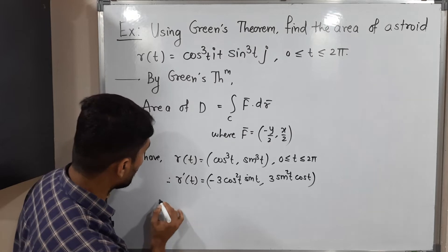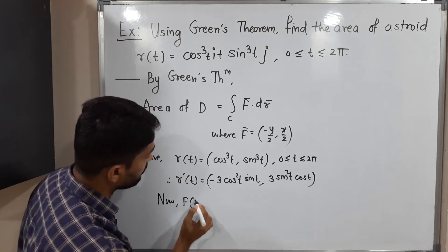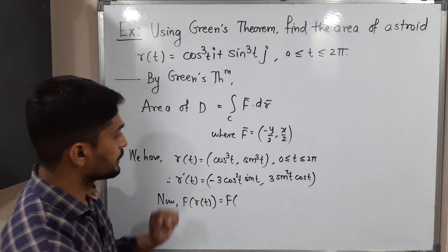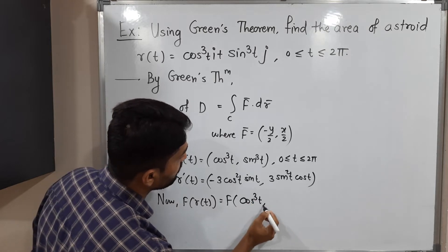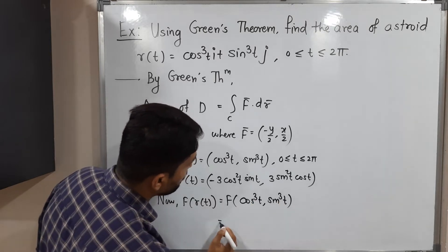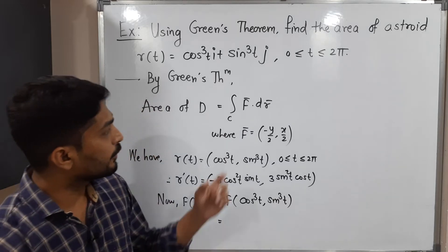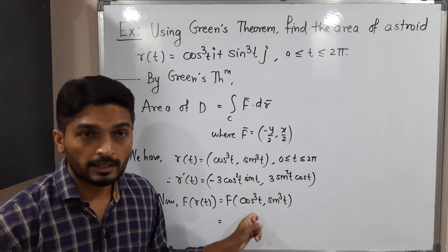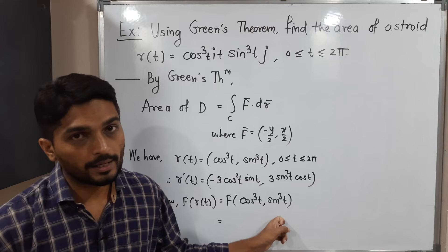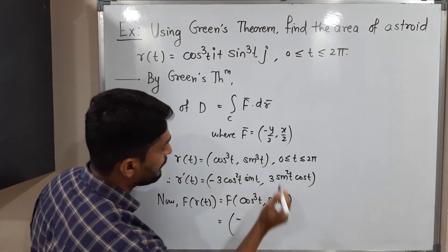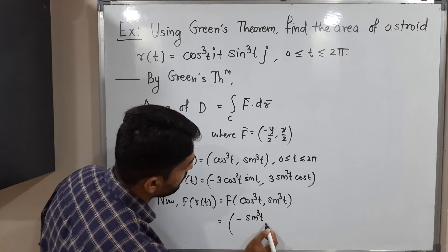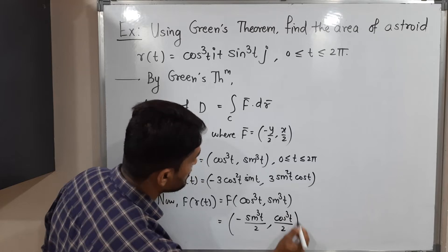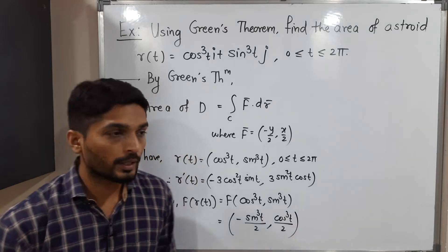Now we find f(r(t)). We substitute r(t) = (cos³t, sin³t) into the definition of f, which is f = (−y/2, x/2). Here x = cos³t and y = sin³t. Following the definition, −y/2 gives −sin³t/2 and x/2 gives cos³t/2. So f(r(t)) = (−sin³t/2, cos³t/2).